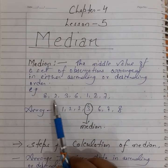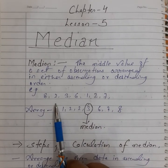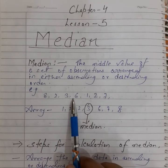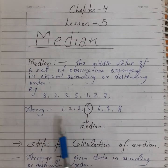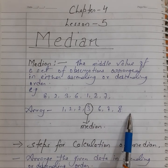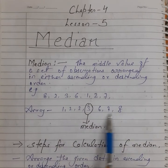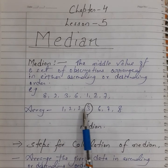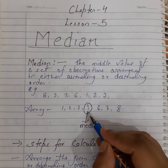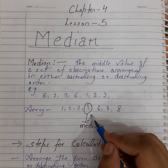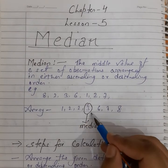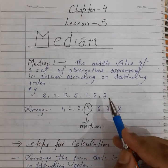Here is one example. The observations of the data are 8, 2, 3, 6, 1, 2, 7. For finding the median, first we have to make an array of those observations. After arranging in ascending order the data is: 1, 2, 2, 3, 6, 7, 8. The total number of observations are 7, so the 4th is the middlemost observation. Therefore the median of the given data is 3.